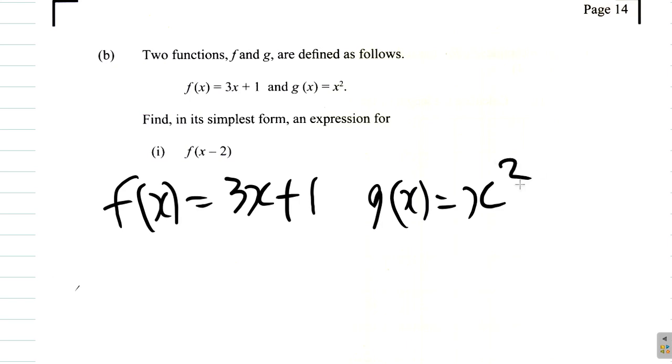Find in its simplest form an expression for f of x minus 2. Now, f of x equals 3x plus 1. But we want f of x minus 2. So, remove this x and find f of x minus 2. Same thing applies to this. This x here, 3 times x, will be 3 times x minus 2. You replace x with it.